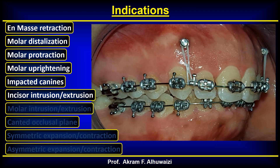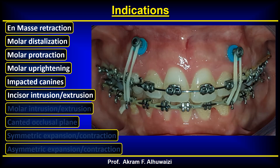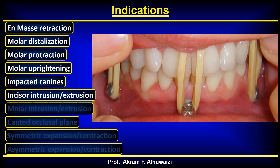Intrusion of the anterior region to address a gummy smile is a common use of TADS. As you can see, you would intrude the incisor area to hide the gummy smile. After finishing the intrusion of the upper arch, you can add intermaxillary elastics to the lower arch to begin intruding the lower arch as well.